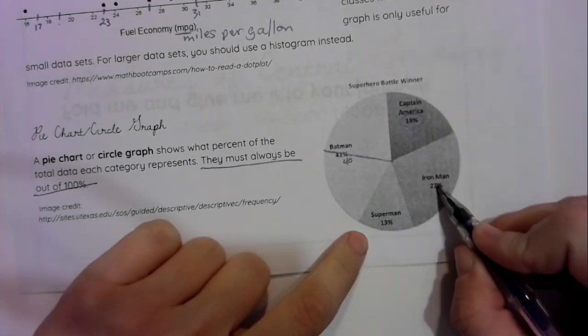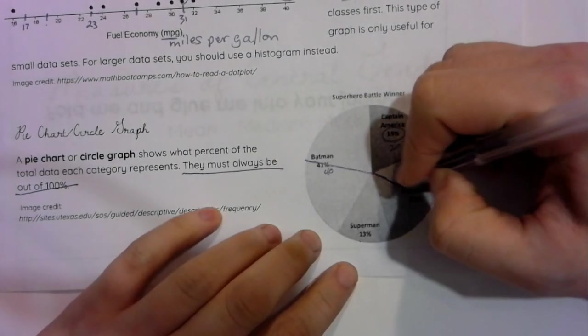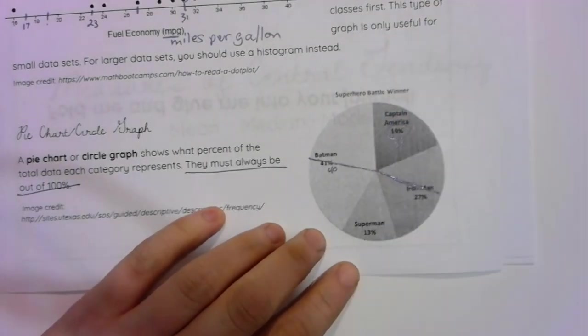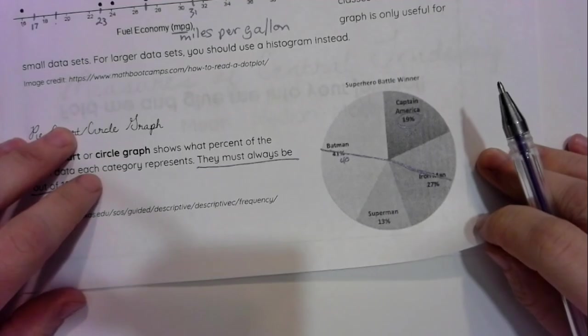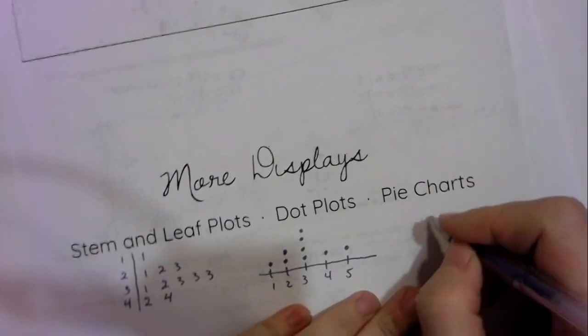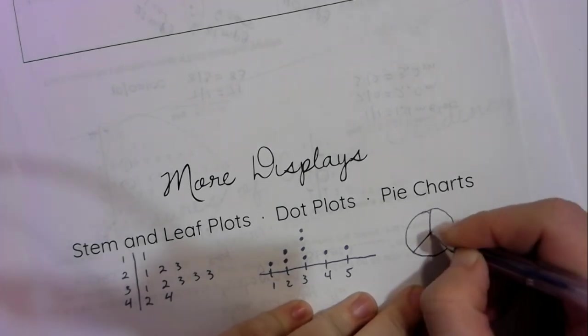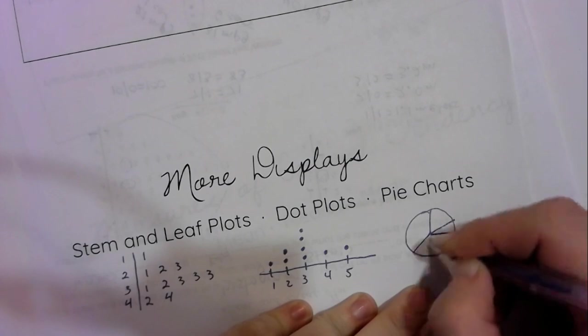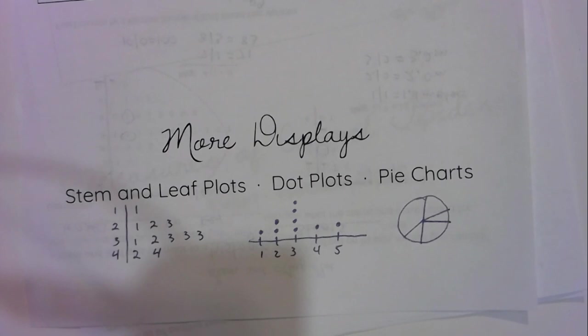Or if you compare the 13 and the 27, 13 is pretty close to half of 27. And if you split Iron Man's little slice in half, it's about twice as big as Superman's. So that's the kind of relationships you're going to see in a pie chart. So then turn back to the front and draw yourself a little pie chart. And it does not have to look exactly like mine. The idea is just to remind yourself what a pie chart looks like. And that's about it for our more displays notes. Thank you for watching.